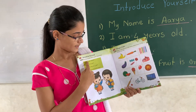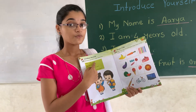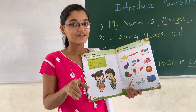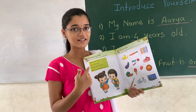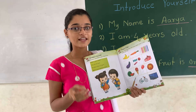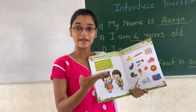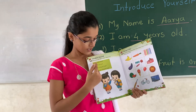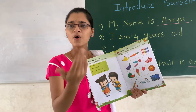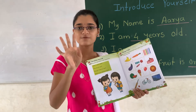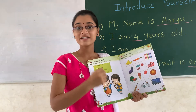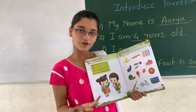Our first question is: What is your name? If your name is Arya, then you have to say: My name is Arya. If your name is Devash, then you have to say: My name is Devash. Now look at our next question: How old are you? If your age is 4, then you have to say: I am 4 years old.